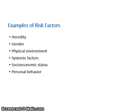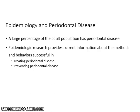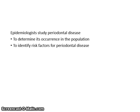Some examples of risk factors are heredity, gender, physical environment, systemic factors, socioeconomic status, and personal behavior. A large percentage of the adult population has periodontal disease. Epidemiologic research provides current information about the methods and behaviors successful in treating and preventing periodontal disease. Epidemiologists study periodontal disease to determine its occurrence in the population and to identify risk factors for periodontal disease.